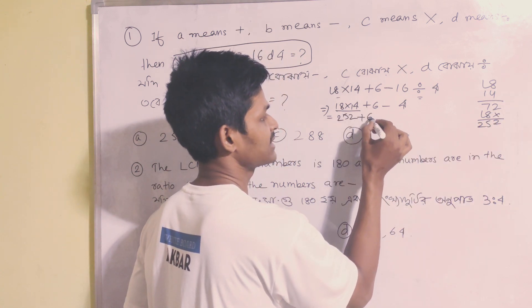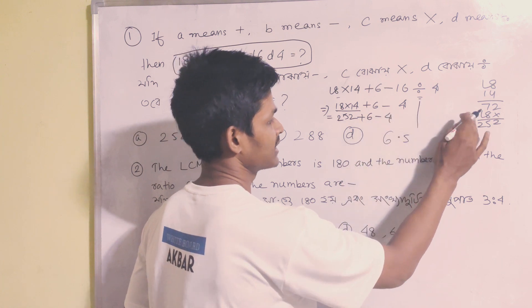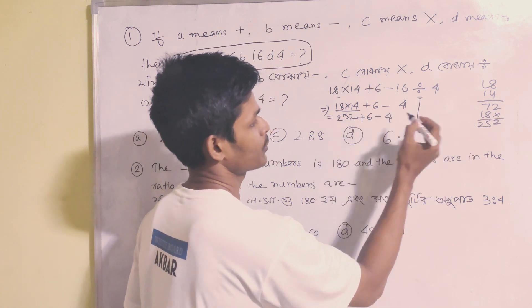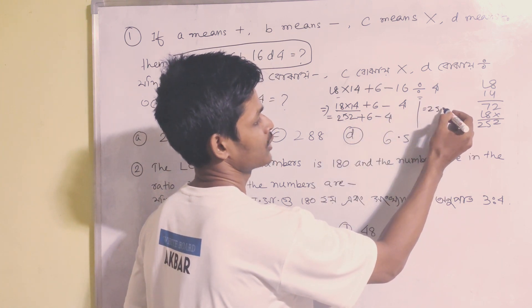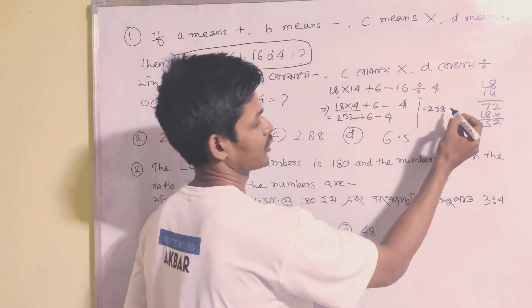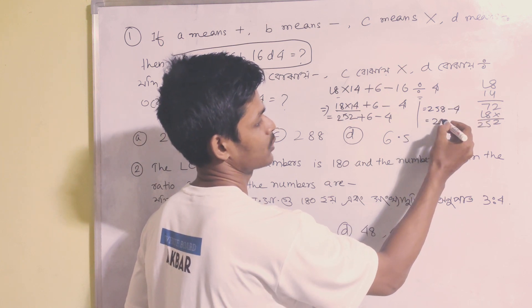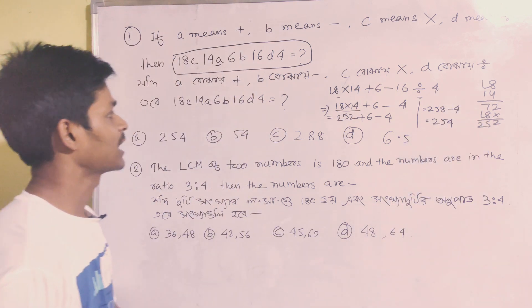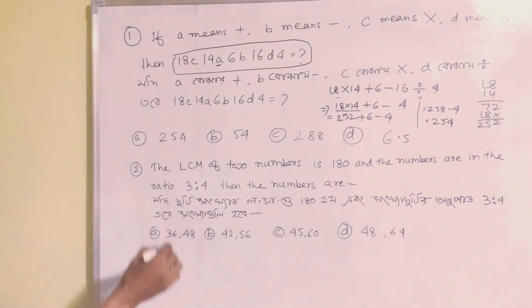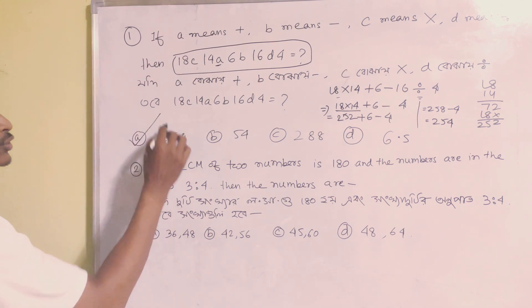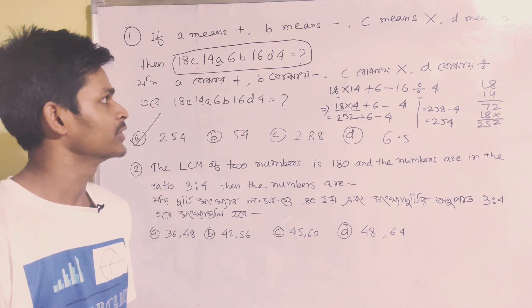So we get 252 plus 6 minus 4, which equals 254. That is the correct answer, correct option.